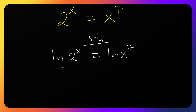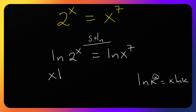When we have k to the power x, that becomes x times ln(k). So the left side becomes x·ln(2), and the right side becomes 7·ln(x).